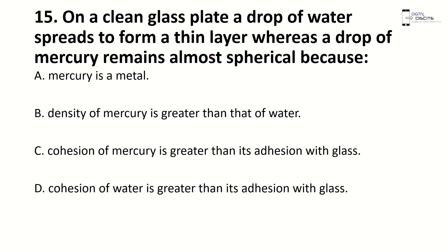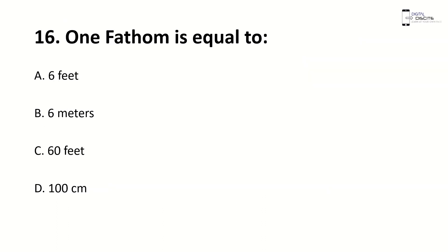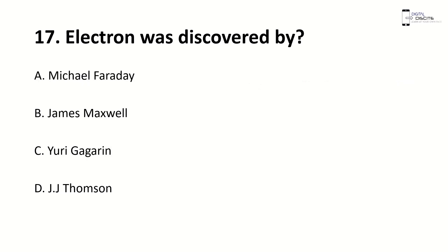On a clean glass plate, a drop of water spreads to form a thin layer whereas a drop of mercury remains more spherical because — right answer is C, cohesion of mercury is greater than adhesion with glass. So water spreads out, but mercury does not. One fathom is equal to — right answer is A, six feet. A fathom is a unit of distance equal to six feet.